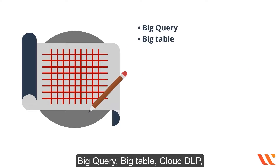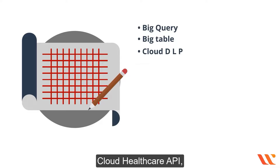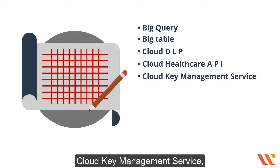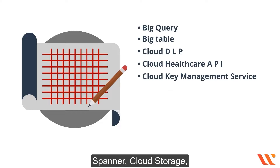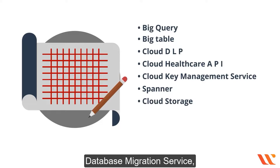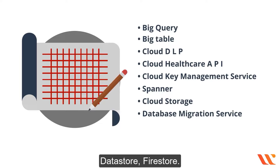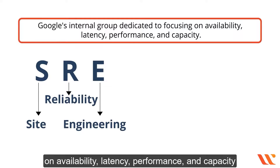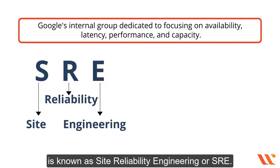The following services have one or more multi-regional locations in addition to regional ones: BigQuery, Bigtable, Cloud DLP, Cloud Healthcare API, Cloud Key Management Service, Spanner, Cloud Storage, Database Migration Service, Datastore, and Firestore. Google's internal group dedicated to availability, latency, performance, and capacity is known as Site Reliability Engineering, or SRE.